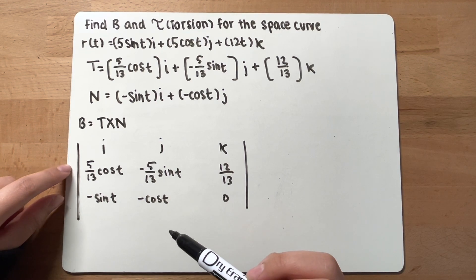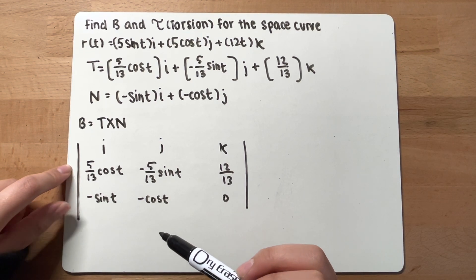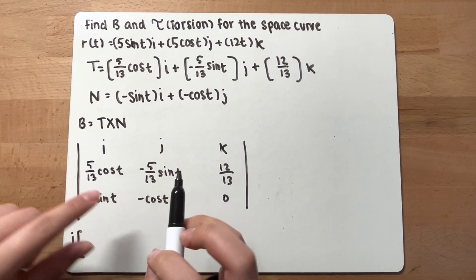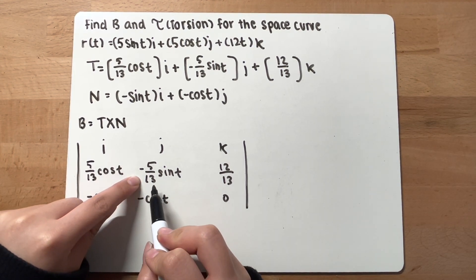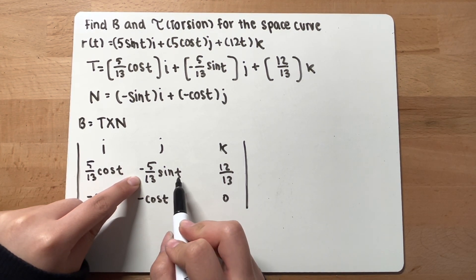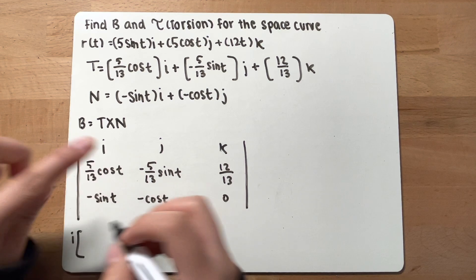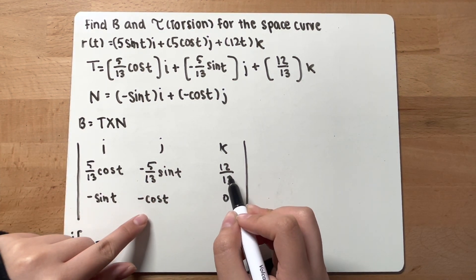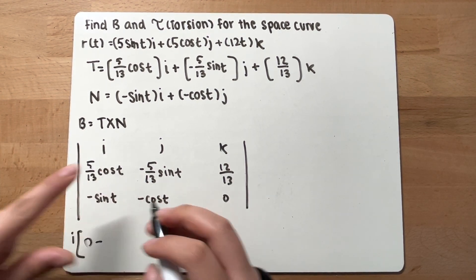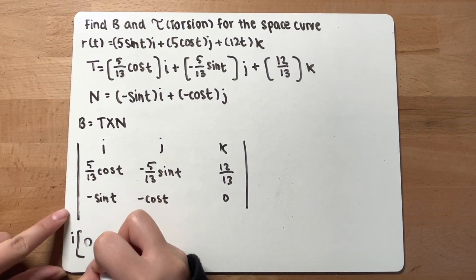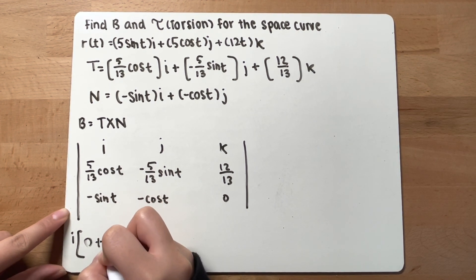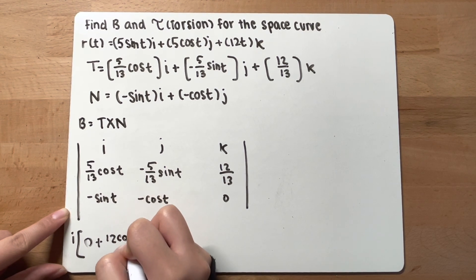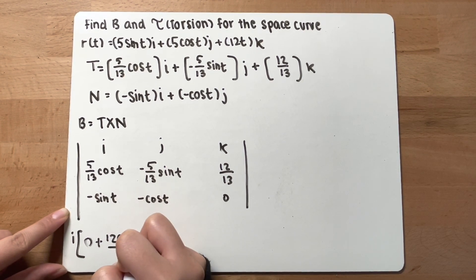Now we just have to calculate i, j, and k. For i, it would be negative 5 over 13 sine t times 0, which is 0, minus 12 over 13 times negative cosine t, which is positive 12 cosine t over 13.